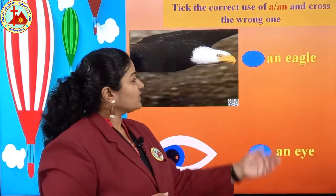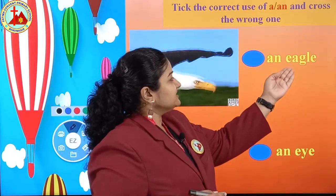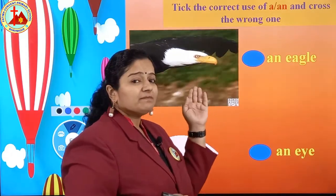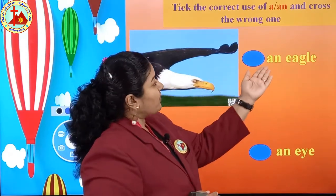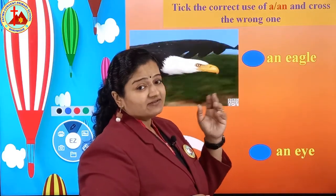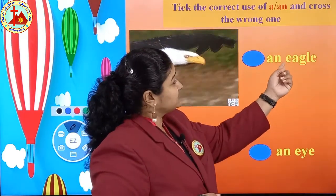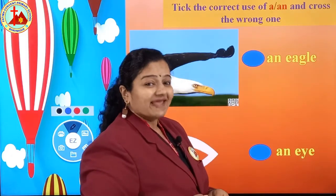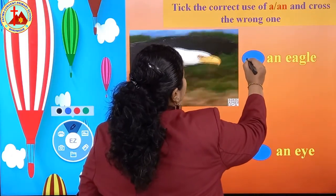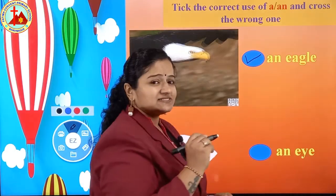Next one is eagle. E, A, G, L, E — eagle is a bird. So an eagle will come or a eagle? E is the first letter, E is a vowel, so AN is correct. This sentence is correct — put a tick mark.